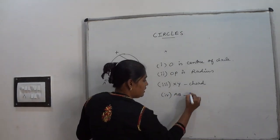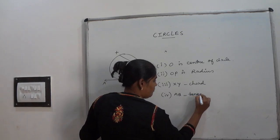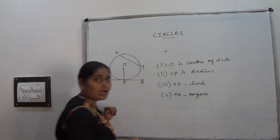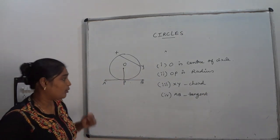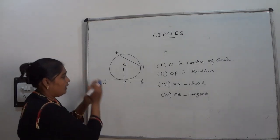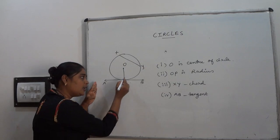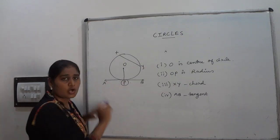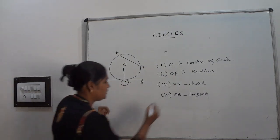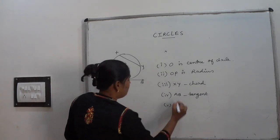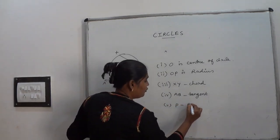AB is tangent. And what is meant by point of contact? Point of contact means tangent touches the circle at a single point. That particular point is called point of contact. So right there, P is point of contact.